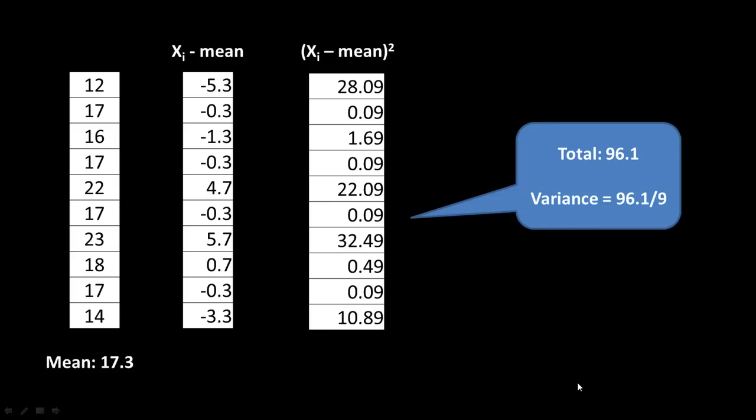Of course, if you think that is the population, then you divide by n. So that is the idea of how to compute the variance.